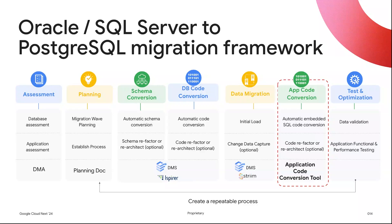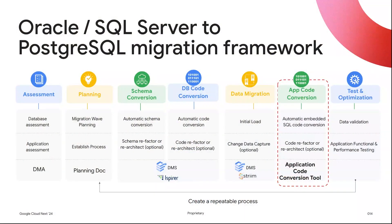Once the database and data are migrated, we cannot forget about the application side. We have a number of tools to help automate some of that conversion. We'll typically choose the tool that meets your specific requirements and application code base. What we're doing with our tooling is scanning your application repository, identifying the embedded SQL, and converting that embedded SQL from Oracle dialect into Postgres dialect — and that is how we accelerate your application conversion process.